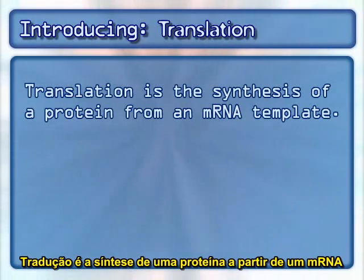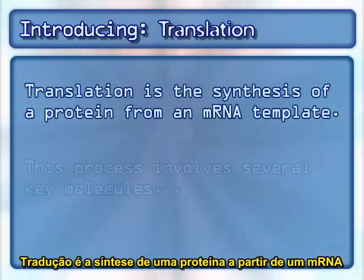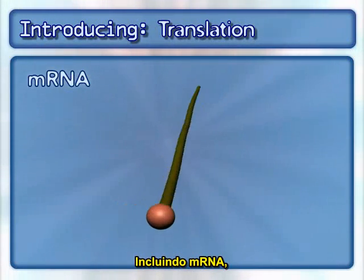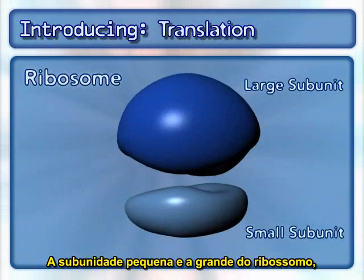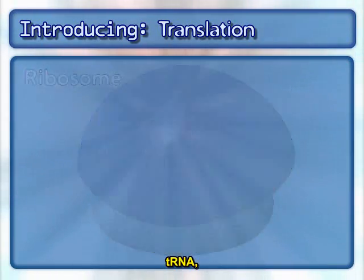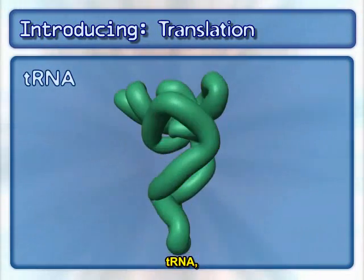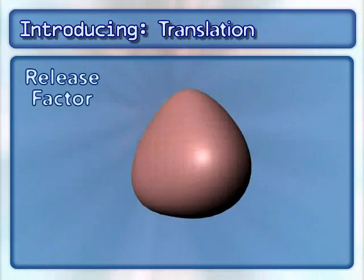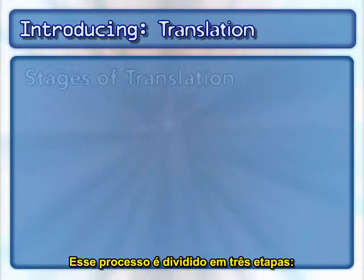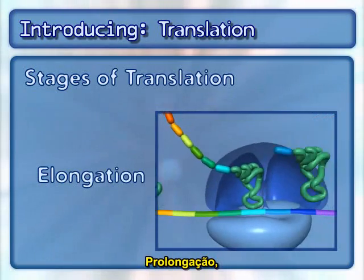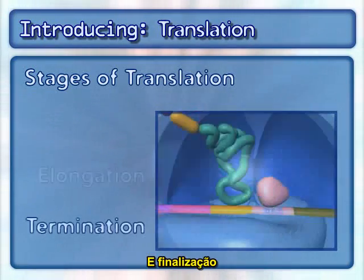Translation is the synthesis of a protein from an mRNA template. This process involves several key molecules, including mRNA, the small and large subunits of the ribosome, tRNA, and the release factor. The process is broken into three stages: initiation, elongation, and termination.